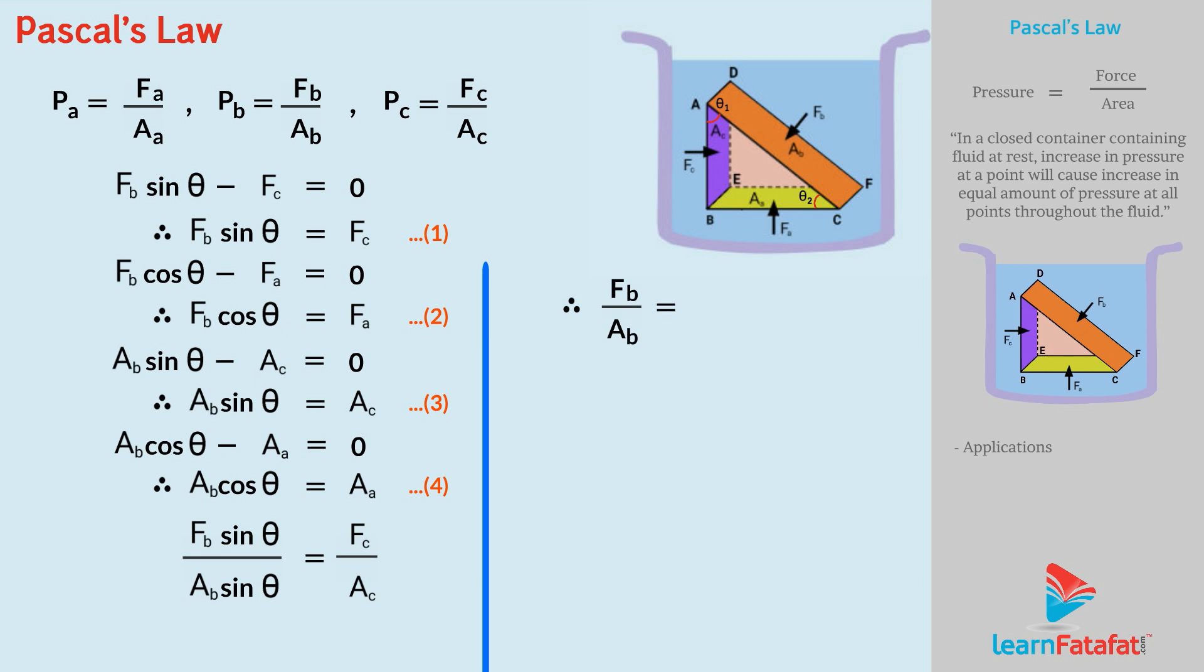Let's call this as equation number 5. Also, dividing equation 2 by equation 4, we get FB cos theta upon AB cos theta equals to FA upon AA. Therefore, FB by AB equals to FA by AA. Let's call this as equation number 6. From 5 and 6, we can say that FB upon AB is equals to FC upon AC which is equals to FA upon AA. Let's call this as equation number 7.